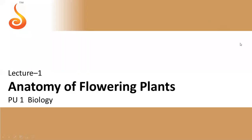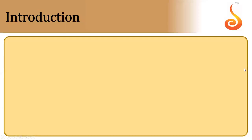Hello everyone. In today's class we will quickly see the anatomy of flowering plants. This chapter is the sixth chapter in your NCRT book. Anatomy is the study of internal parts of the plant, or internal organs of the plant — that's called anatomy.